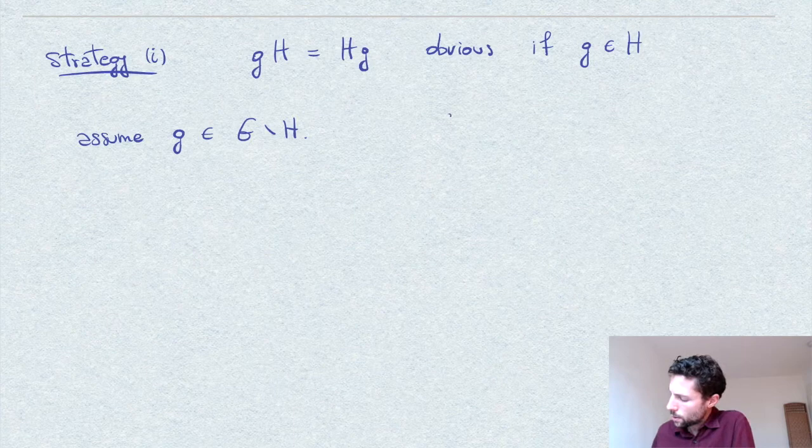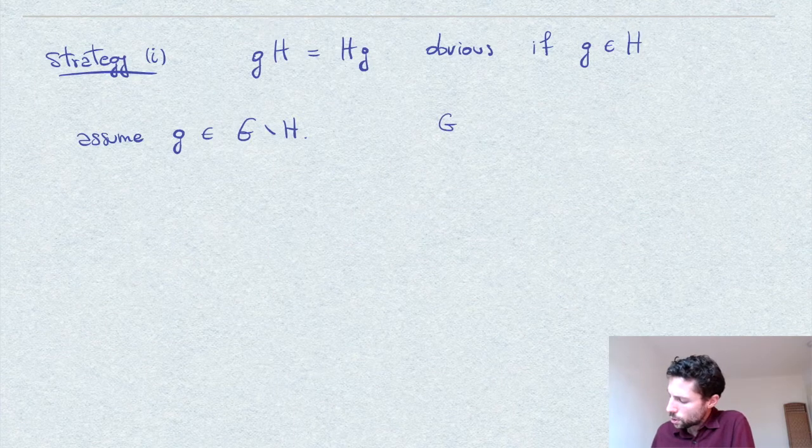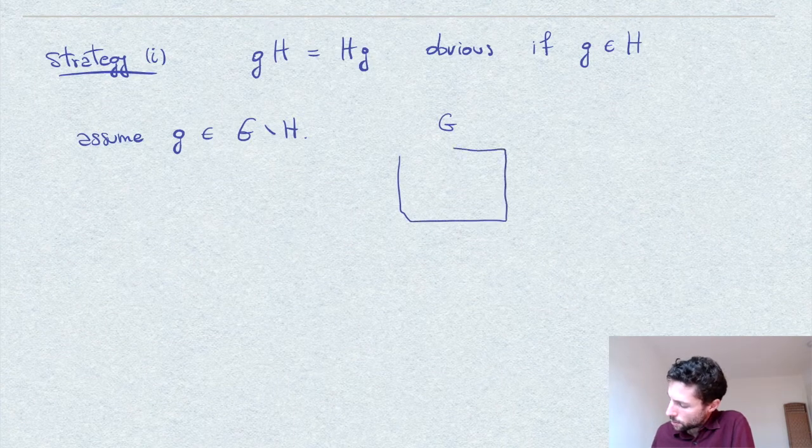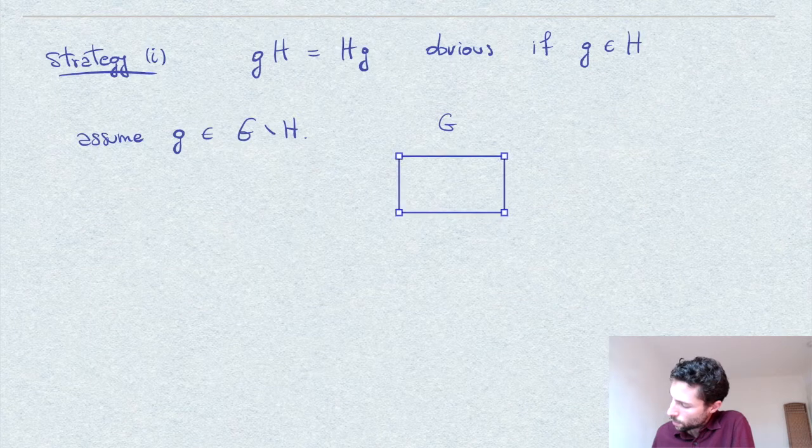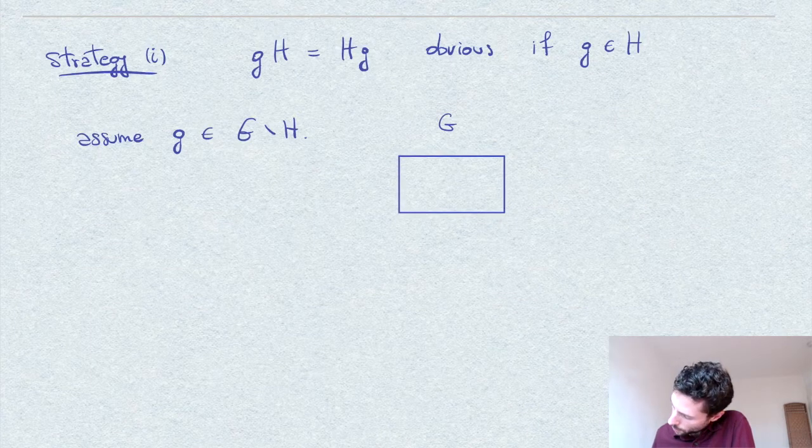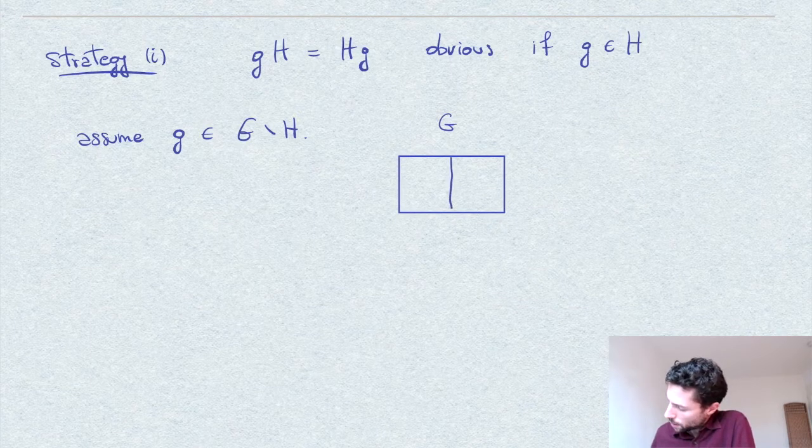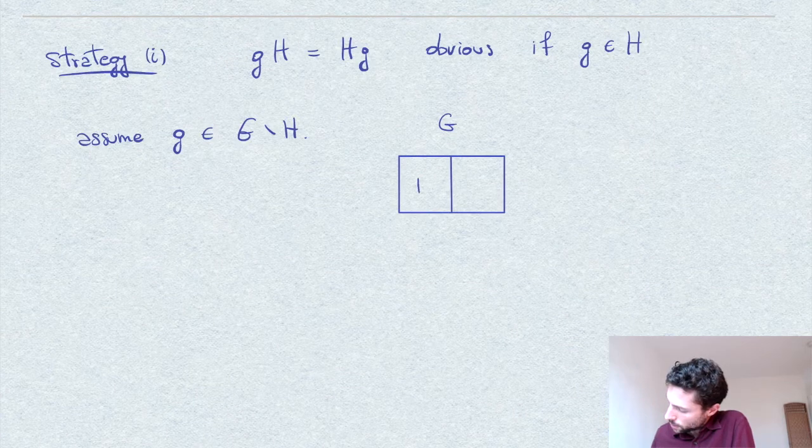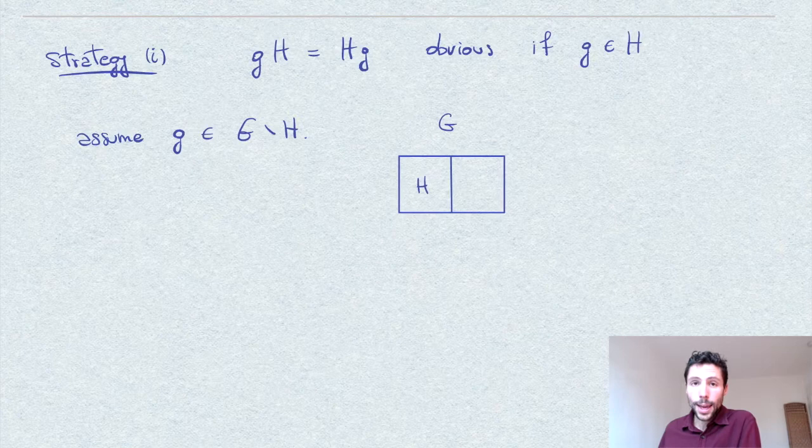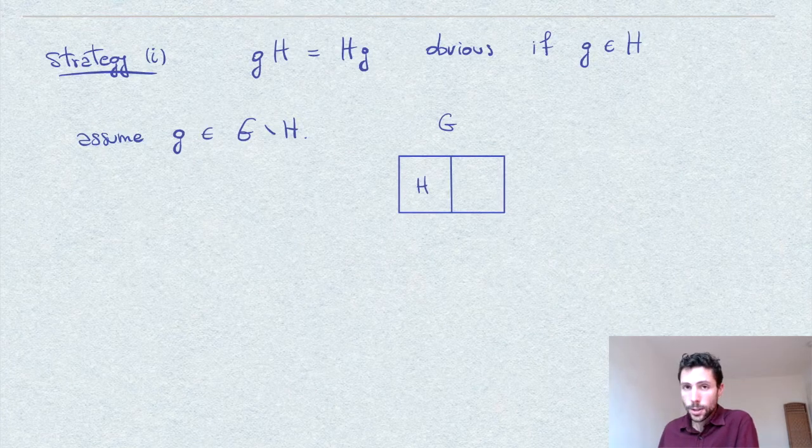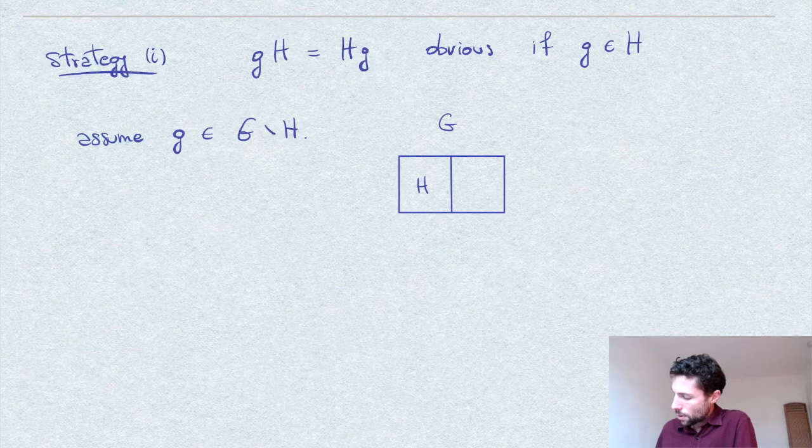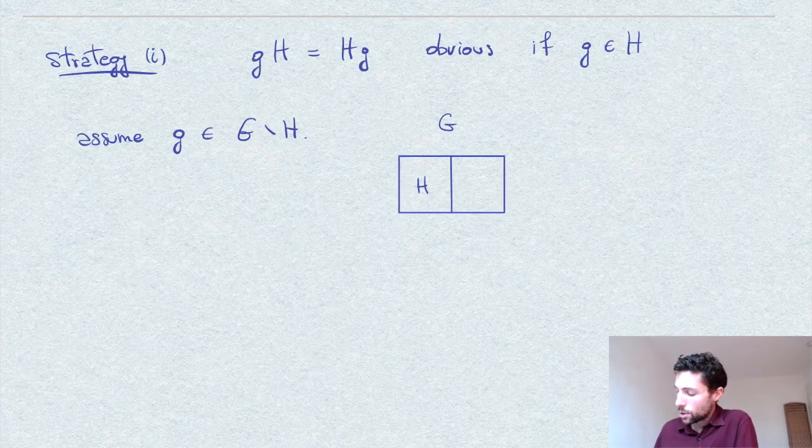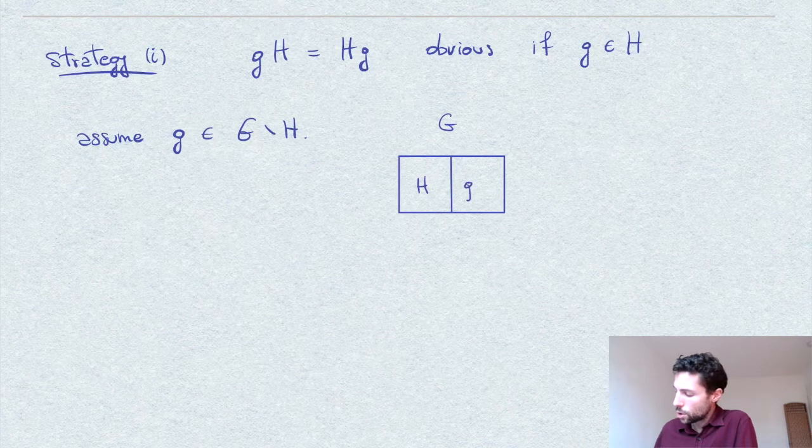Now let's picture G as a box like this. Now some part of this box would be H, the subgroup H, which we think of now as a coset. And since we know that H has index 2 into G...